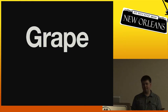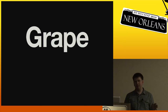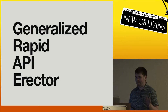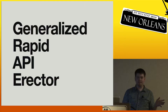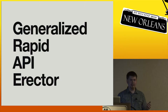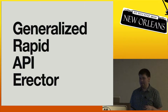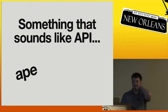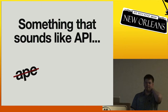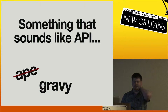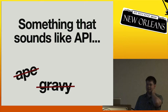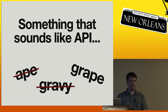Today I am announcing the first release of Grape — it's 0.1.0, on rubygems.org right now. This is a very beta 0.1.0. I'd like to tell you that Grape stands for the Generalized Rapid API Erector or something clever like that, but in reality I just wanted something that sounds like API. I considered 'gravy' but someone else at Intridia is working on something called gravy, so — Grape. That sounds kind of like API.